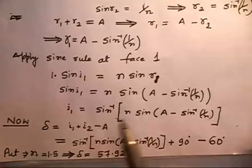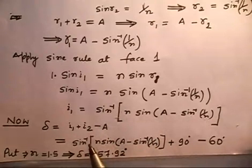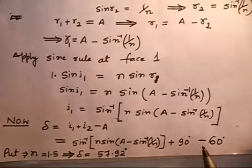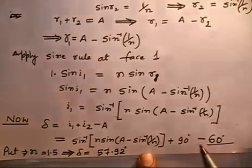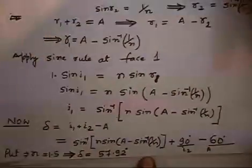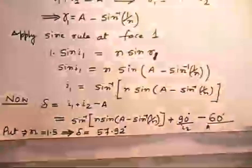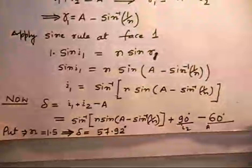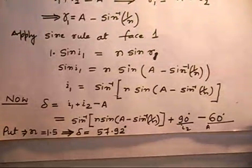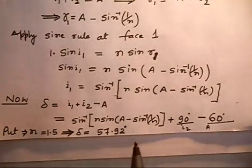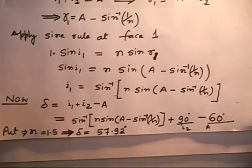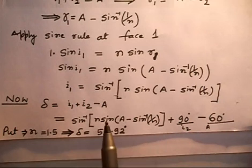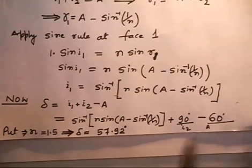Now I know I1 equals sin inverse of N times sin(A minus sin inverse(1/N)). Plus I2 which is 90 degrees, minus A which is 60 degrees. If you put the refractive index N equal to 1.5 and A equal to 60 degrees, use your calculator — take sin inverse of 1/N, subtract from A, take sine, multiply by 1.5, take sine inverse, add 90, subtract 60 — delta comes out to be 57 degrees.